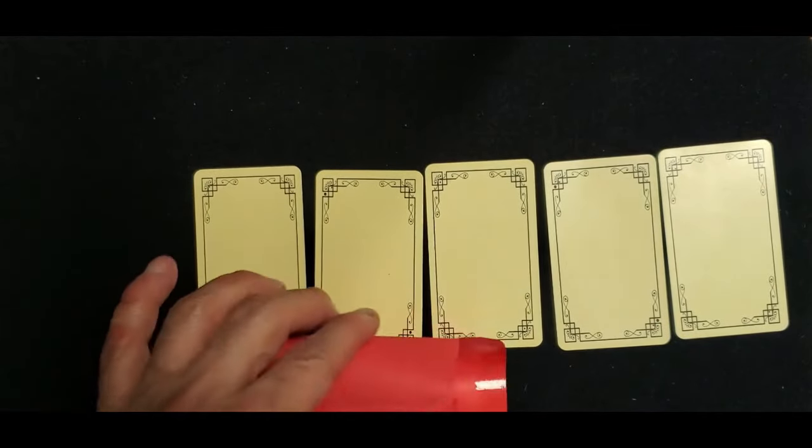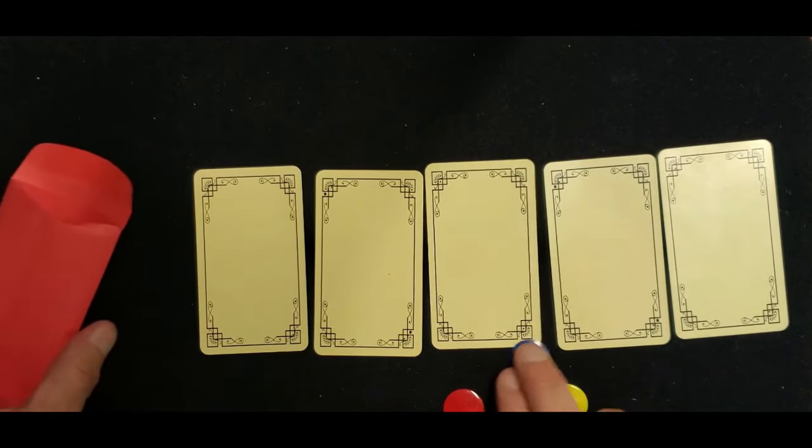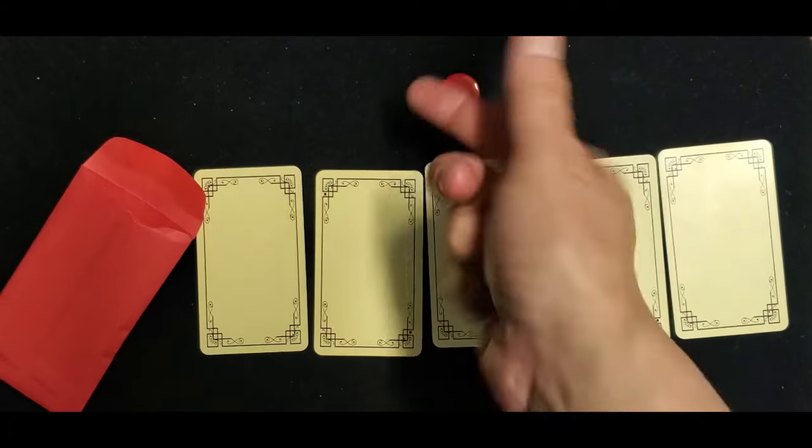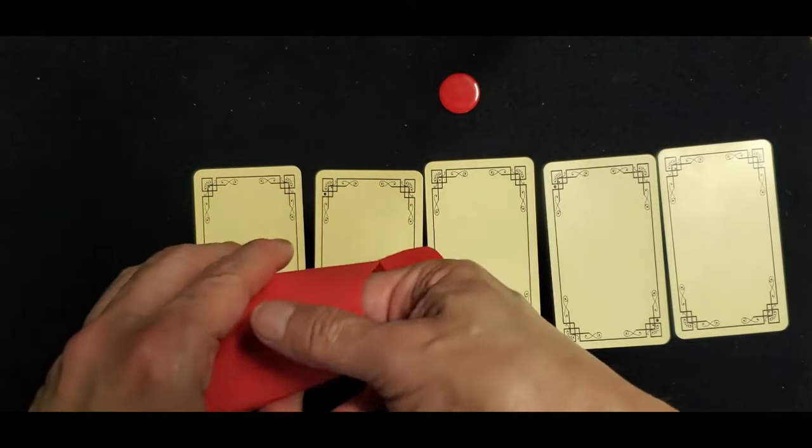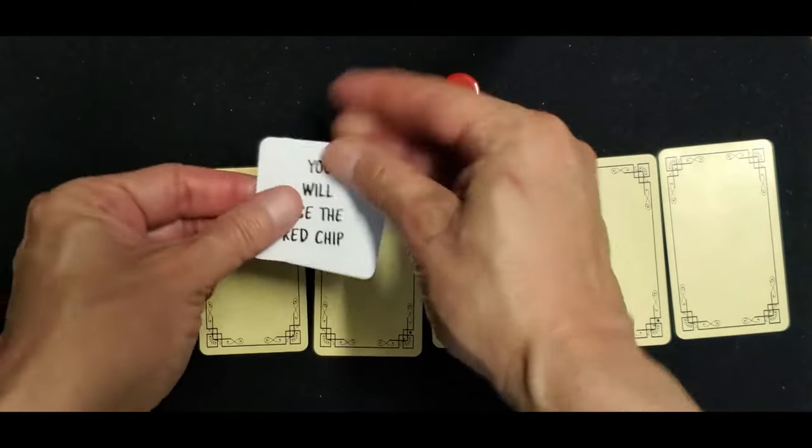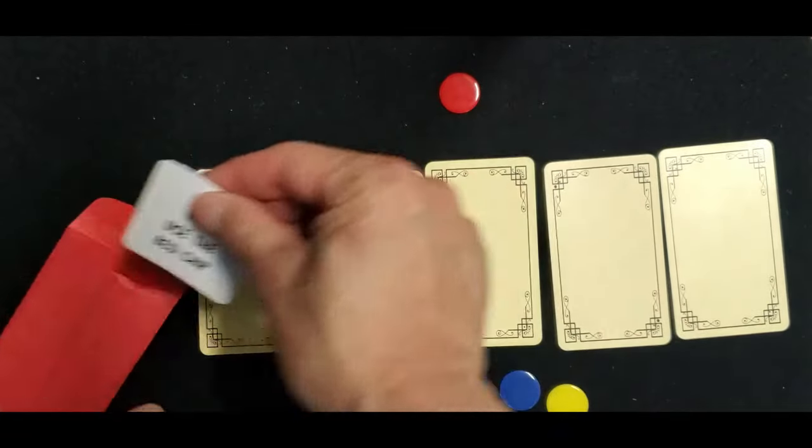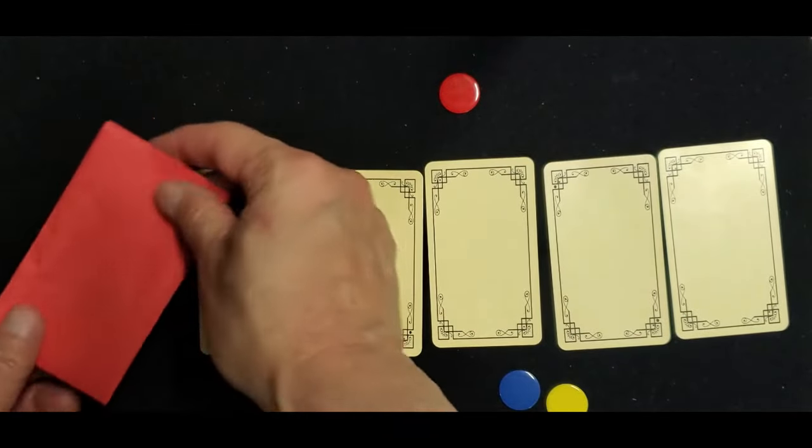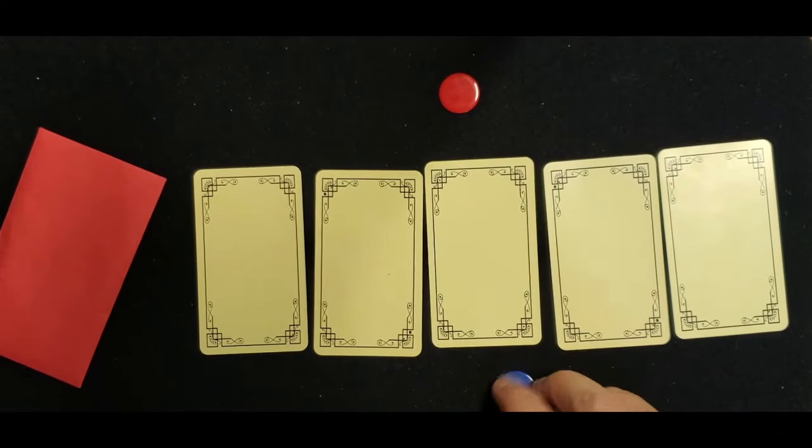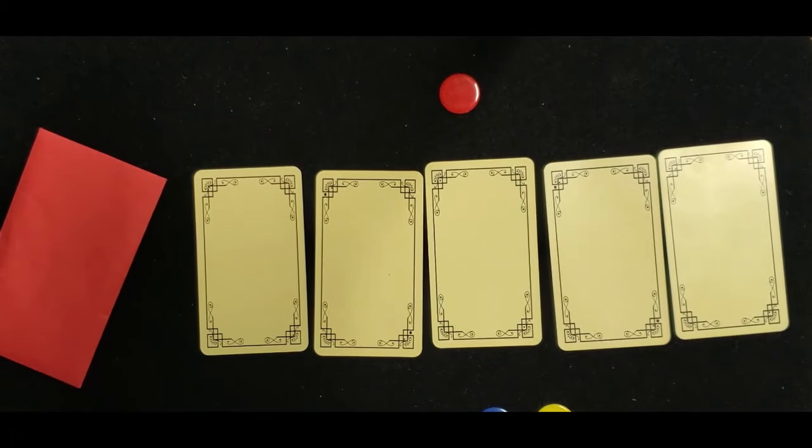The participant then chooses one of three different colored chips, say the red. Inside the envelope is shown to be two messages. Only one is revealed right now, the other one will be revealed later. The participant now decides to put the chip on any one of the five cards, such as the middle one.